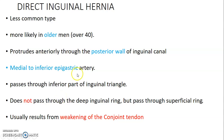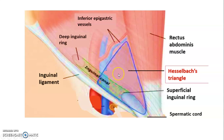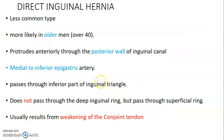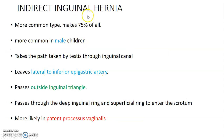Direct inguinal hernia is the less common type, mainly in older men. There is protrusion of abdominal viscera through the posterior wall of the inguinal canal — formed by the fascia transversalis and the conjoint tendon of transversus abdominis and internal oblique. This direct hernia occurs medial to the inferior epigastric vessel due to a defect on the posterior wall. It passes through Hesselbach's triangle but does not pass through the deep inguinal ring, only through the superficial ring, usually due to weakening of the conjoint tendon and fascia transversalis.